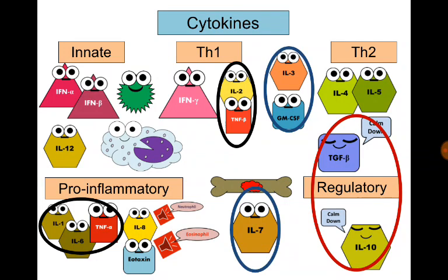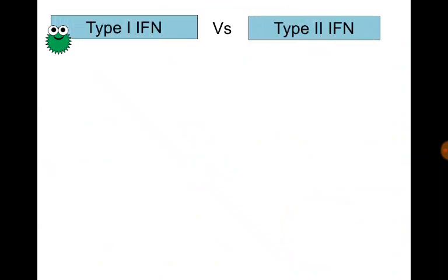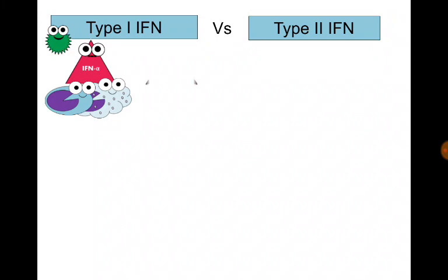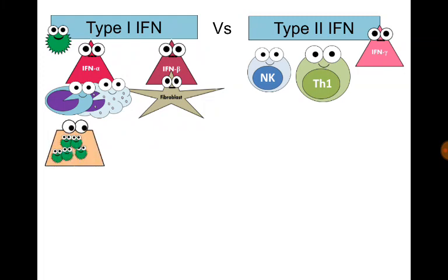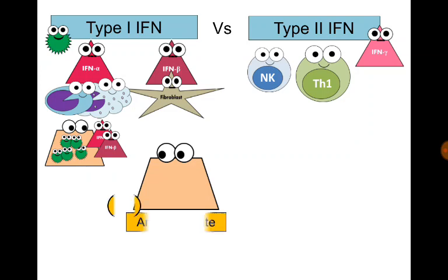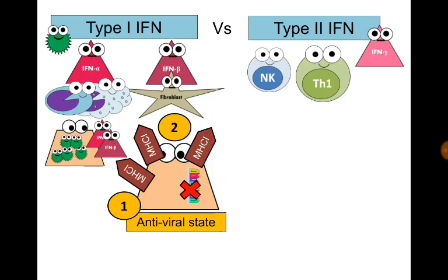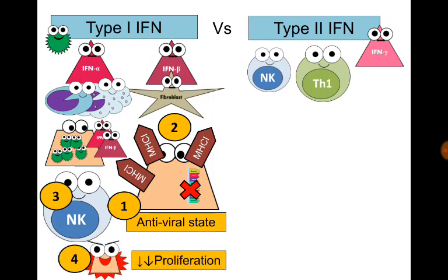Let's discuss their functions in detail, starting with interferons — the cytokines that combat viruses. Type 1 interferons, including interferon alpha produced by monocytes and macrophages, and interferon beta produced by fibroblasts, are produced in response to viral infection and act to protect neighboring cells. First, neighboring cells enter an antiviral state by inhibiting RNA replication. Second, they increase expression of MHC class 1 molecules on cell surfaces to recruit T cytotoxic cells. Third, they activate natural killer cells. The last function of type 1 interferon is inhibiting cell proliferation, a protective mechanism against tumors.